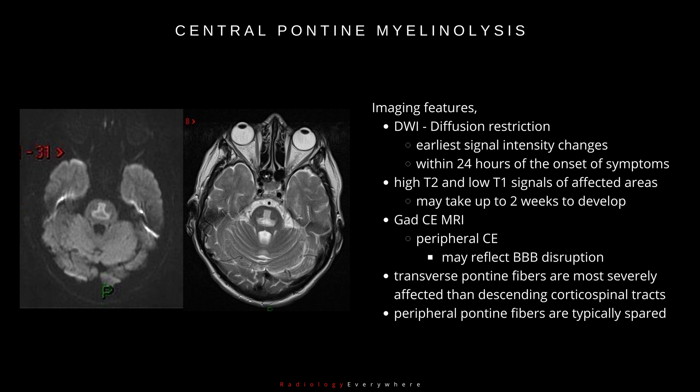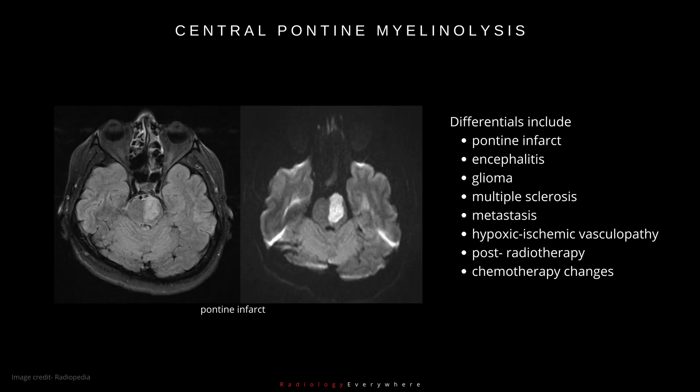Gadolinium contrast enhancement is occasionally seen in the periphery of the lesion and may reflect blood-brain barrier disruption. The transverse pontine fibers are most severely affected compared to the descending corticospinal tracts, and the peripheral pontine fibers are typically spared, hence the term central pontine myelinolysis.